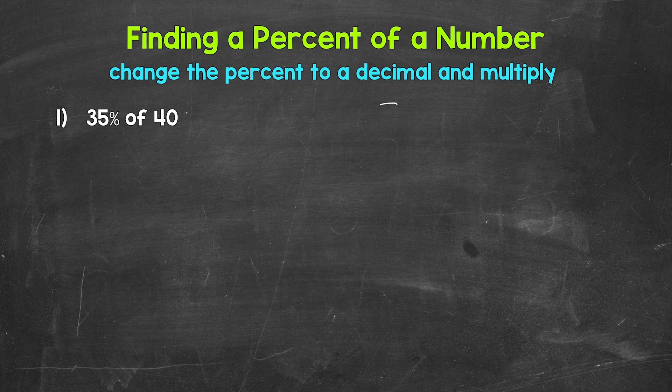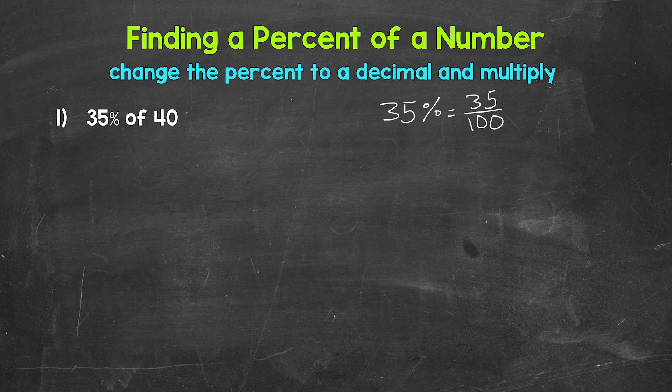So again, 35% equals 35 over 100 — 35 hundredths — as a fraction. So here we are finding a percent, a fraction of 40. And that word 'of' tells us to multiply. So when finding a percent of a number, we multiply.